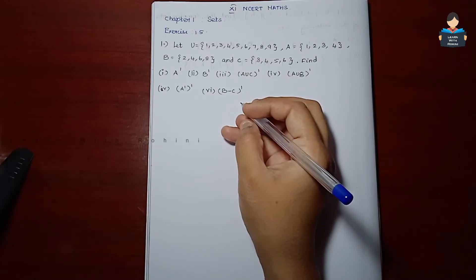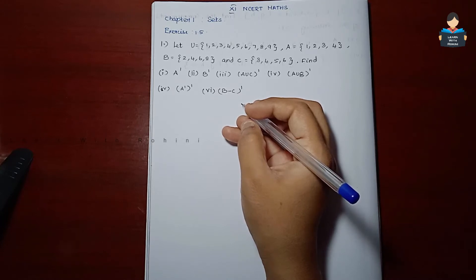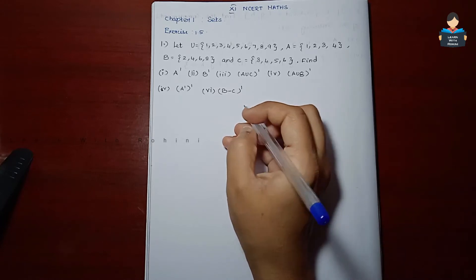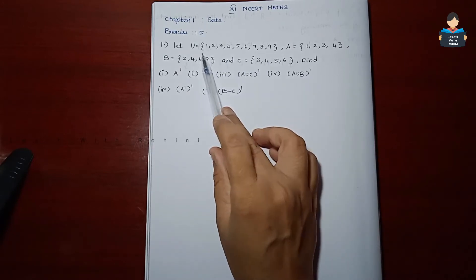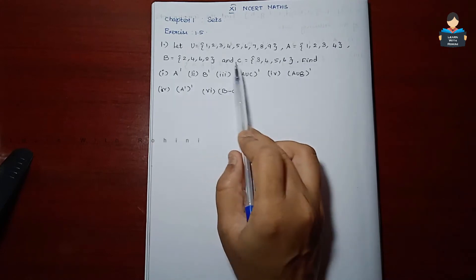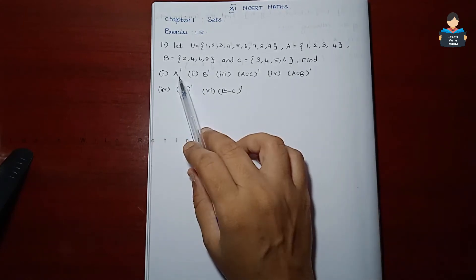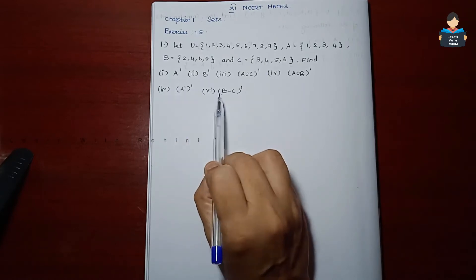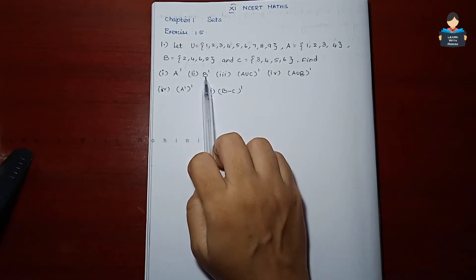Hello everyone, welcome to our channel. In this video, 11th standard NCERT Maths Chapter 1 Sets, Exercise 1.5, first sum. In this sum, a Universal set is given, and sets A, B, C — these 3 sets are given. We need to find six subdivisions: A complement, B complement...